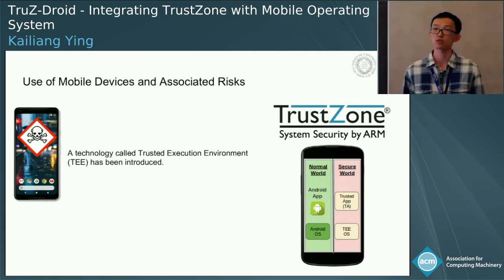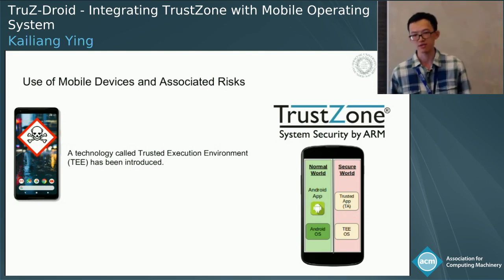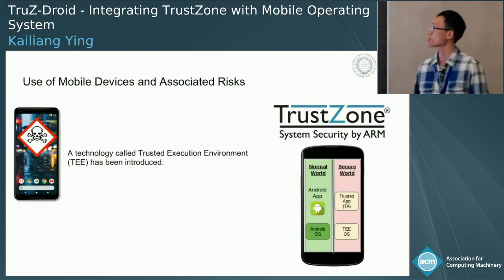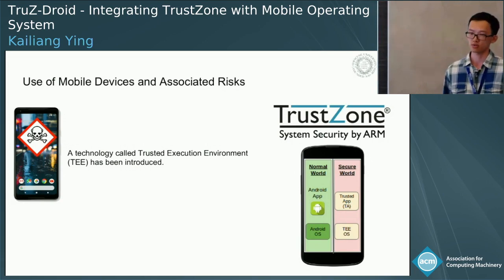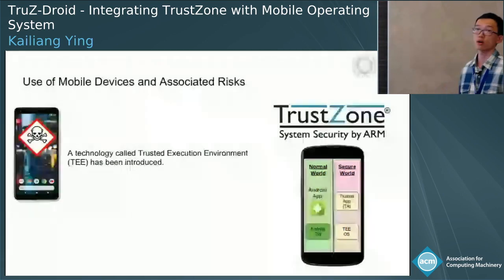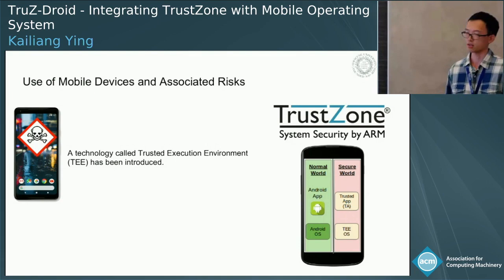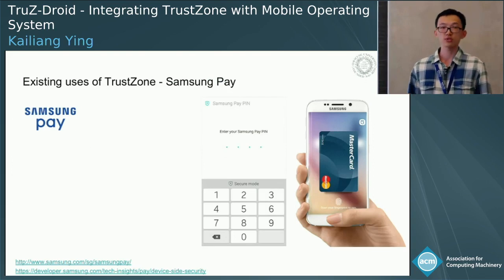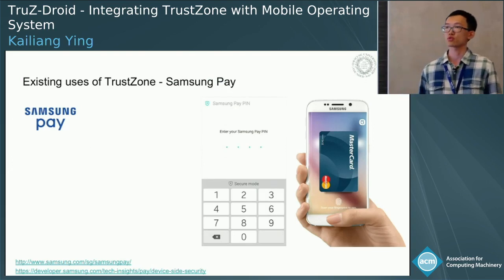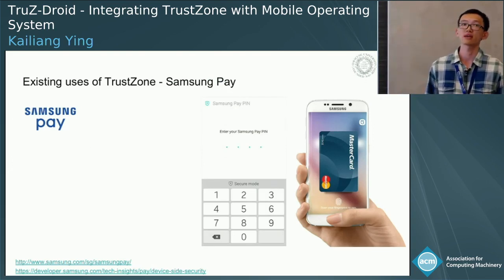One representative technology is called TrustZone, which ships with all ARM-based mobile platforms. TrustZone has the concept of the normal world and the secure world. The normal world runs the Android OS and normal applications, and the secure world runs a very small OS called TEE OS and some trusted applications also called TAs.